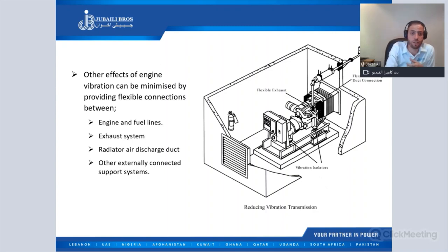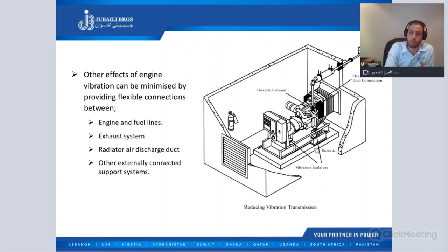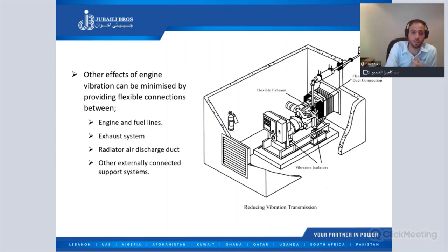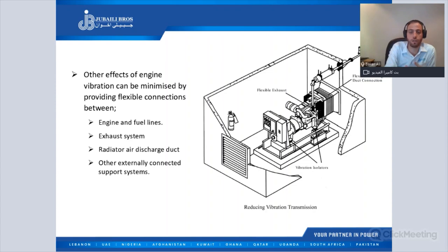Other effects of engine vibration can be minimized by providing flexible connections between the engine and fuel lines, to avoid vibration transmission from the engine to the steel fuel lines and to avoid any damage. For the exhaust system, we fix flexible bellows to avoid vibration transmission from the engine to the exhaust system. For the air discharge duct, we fix a flexible duct connector to avoid vibration transmission to the wall and to the building.